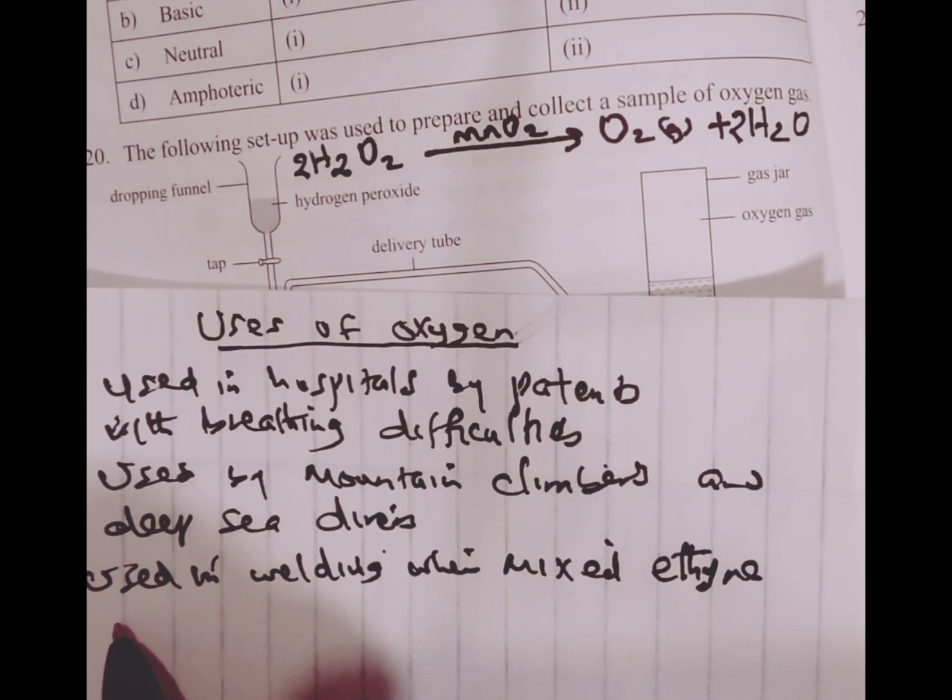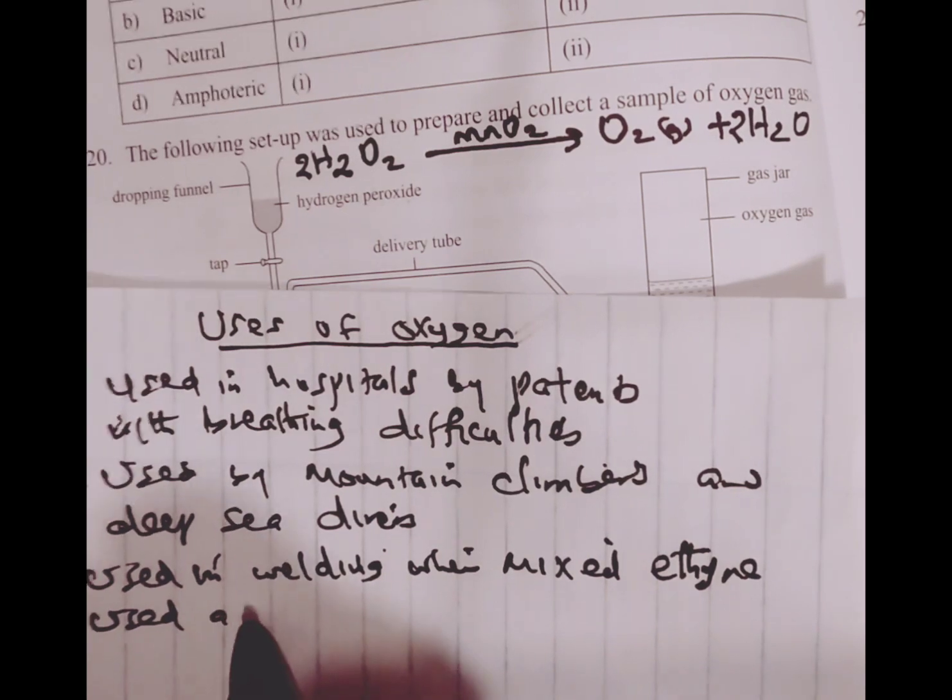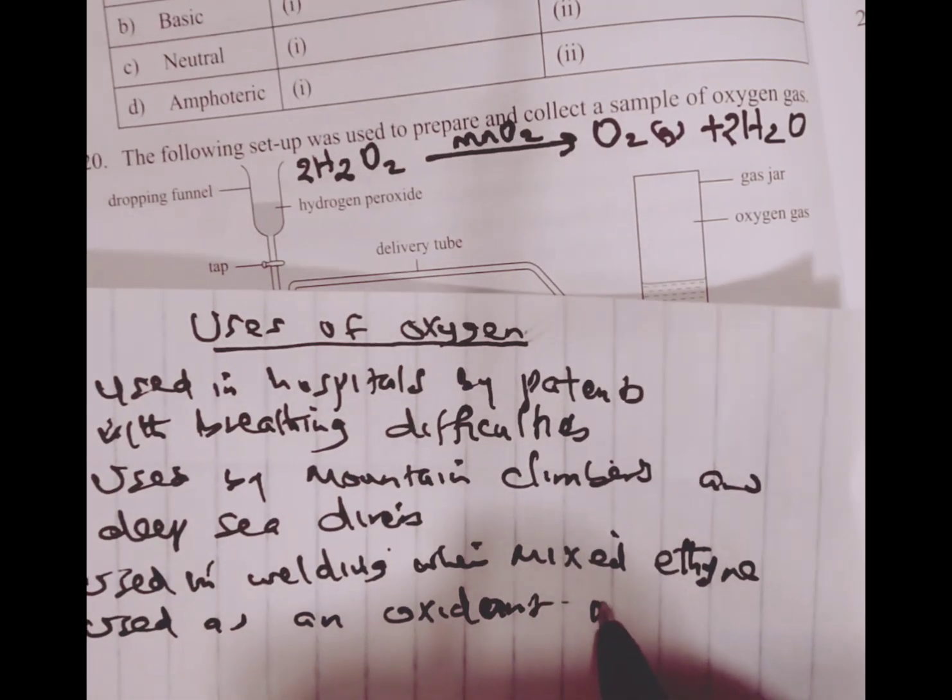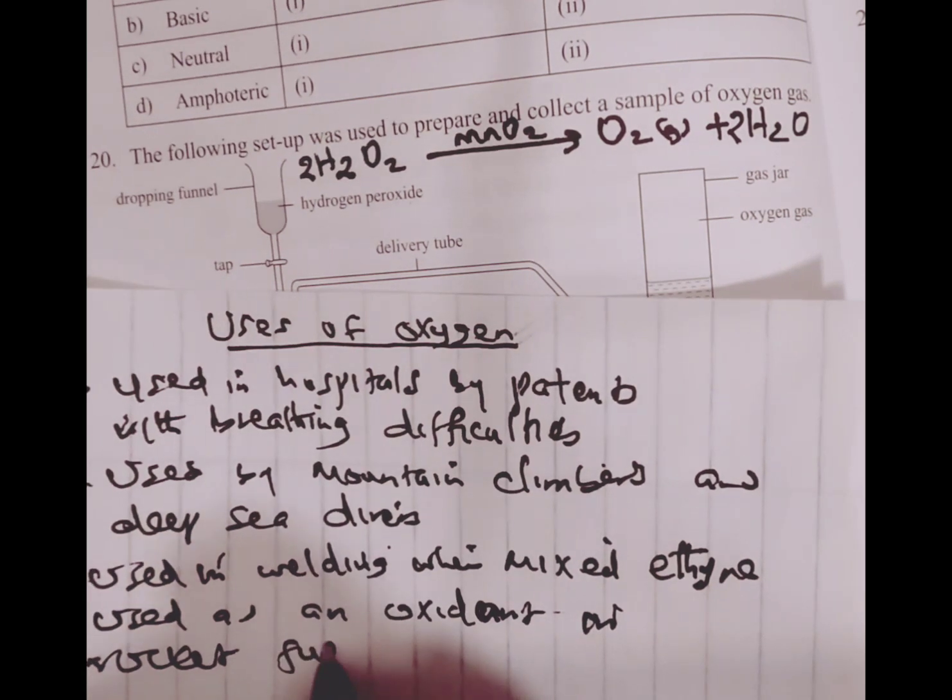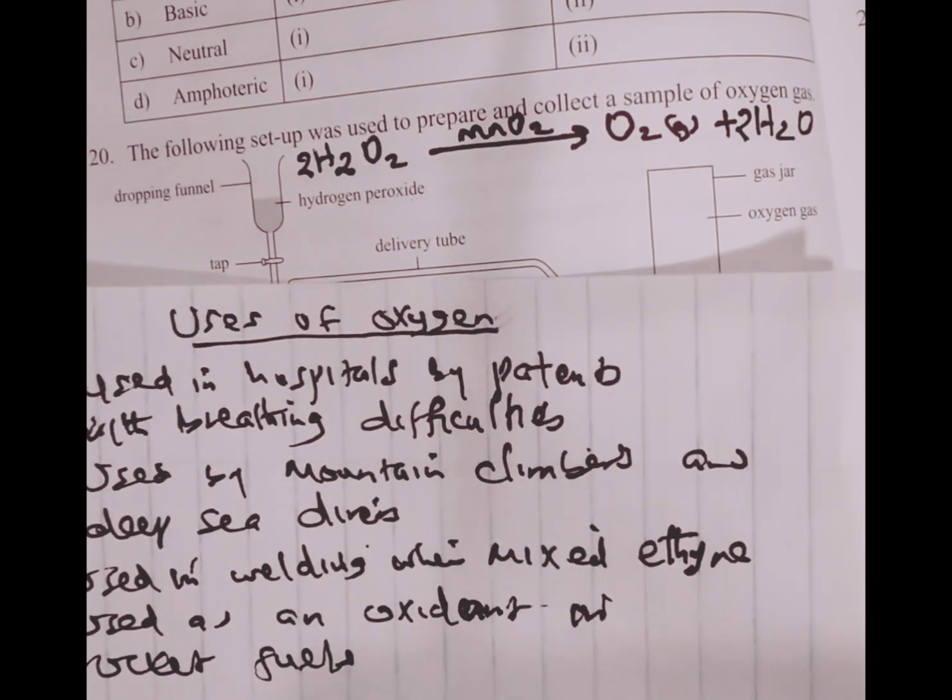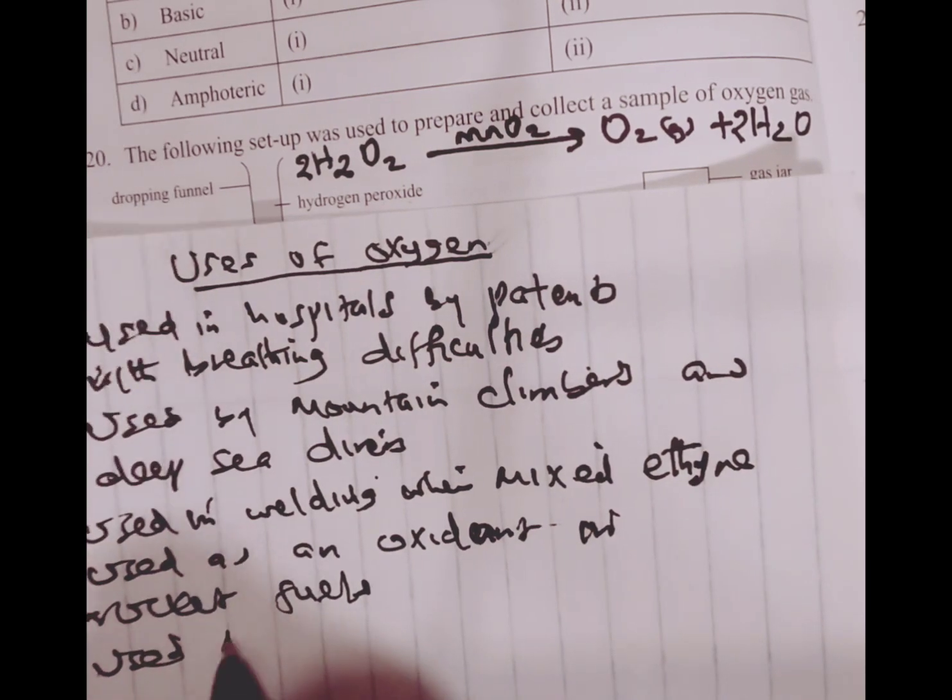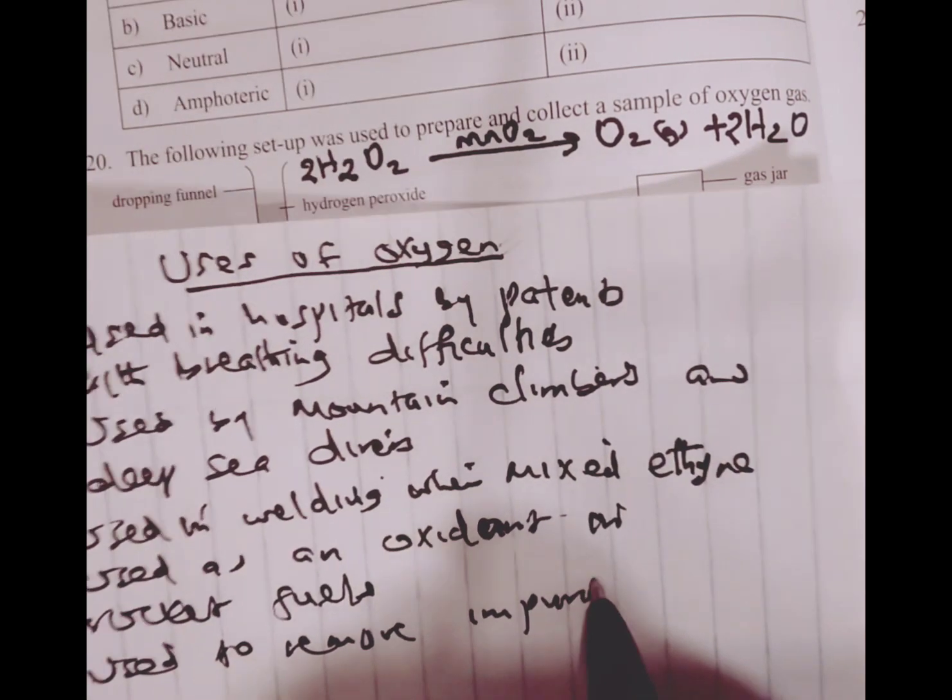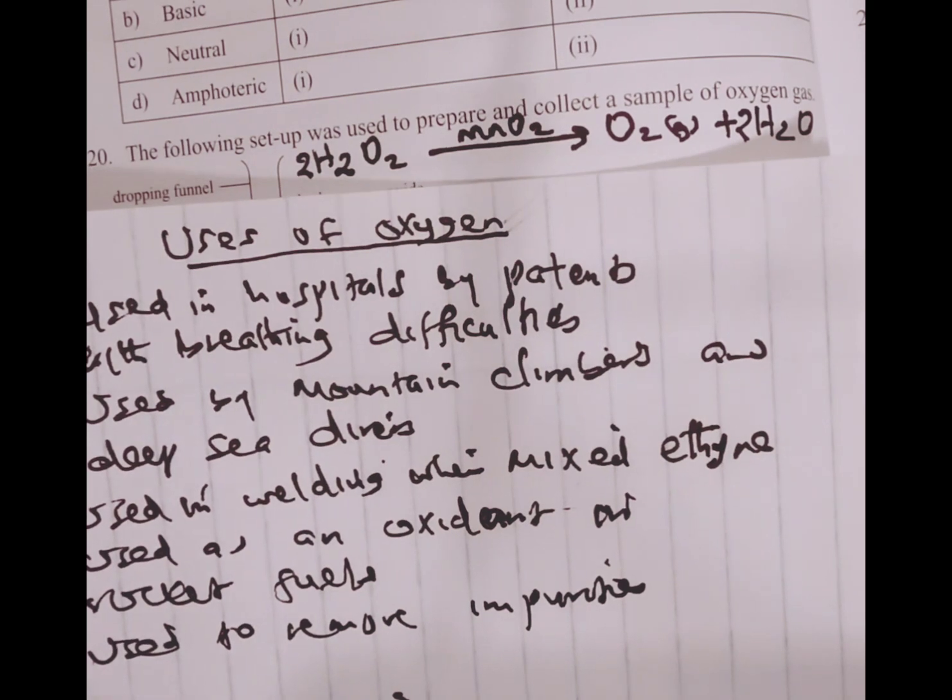Next, it is used as an oxidant in rocket fuels, and of course it can be used to remove impurities during steel making.